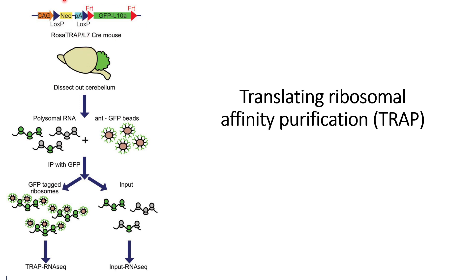First, we inject this plasmid into animals, into a specific part of the animals, or into specific cell lines. After that, we visualize the GFP reporter in the cells, and we can separate out the polysome RNAs using this GFP reporter.